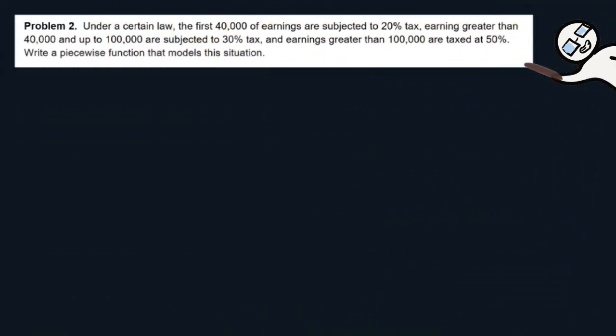Here is another problem. Under a certain law, the first 40,000 of earnings are subjected to 20% tax. Earnings greater than 40,000 and up to 100,000 are subjected to 30% tax. We need to write a piecewise function that models this situation.